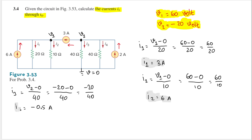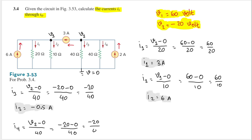And the last value to find is i4: i4 equals (V2 minus 0) divided by 40 ohms, so i4 equals minus 20 divided by 40, which gives i4 equals minus 0.5 amperes. We now have all the answers asked by the question. Thank you for watching — see you in the next video, bye bye.